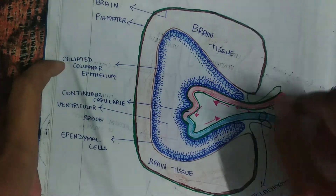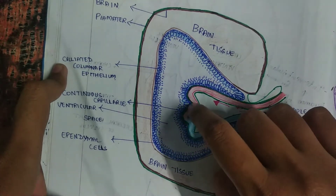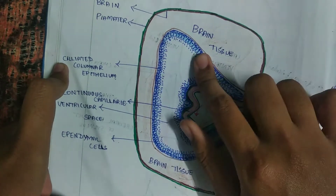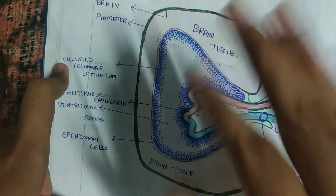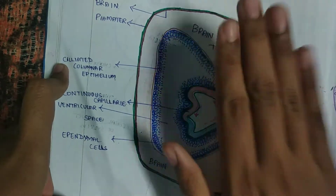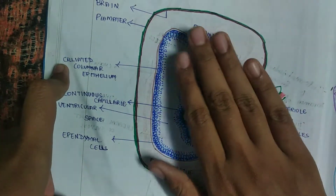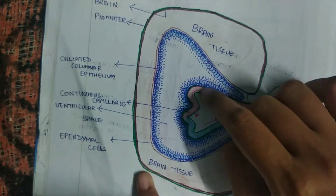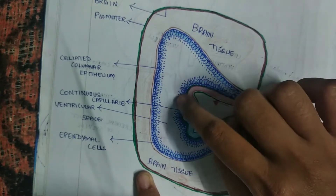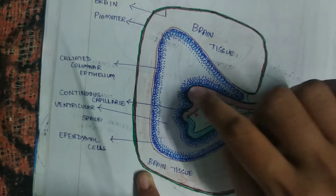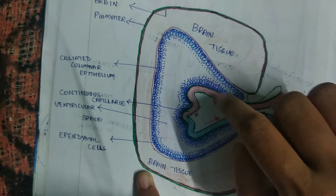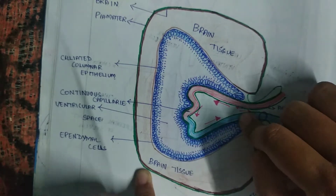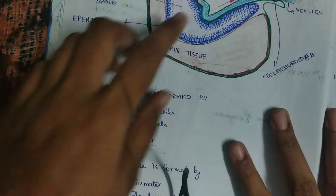From the capillaries, the CSF is secreted. We know that lymphatic drainage is not present in the brain. Instead of that, CSF acts as the lymphatic drainage of the brain. So the CSF is secreted from the blood vessel through the ependymal cells. From blood, some solutes and solvents will be entering into the ventricles through this choroid plexus.